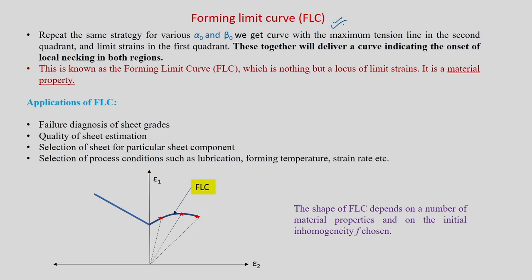Let us introduce the forming limit curve again. What is this forming limit curve? This forming limit curve is nothing but the curve which indicates onset of local necking in both the first quadrant and the second quadrant. It is the locus of limit strains.